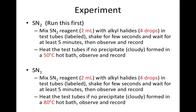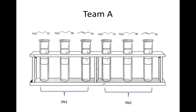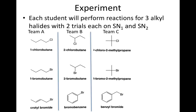To perform the reaction, we will mix 2 mL of the reagent and 4 drops of the alkyl halide in test tubes. Mix well and observe if a precipitate forms, recording the time needed for it to appear. If no precipitate forms at room temperature, the test tube is immersed in a hot water bath and observed again. The hot water bath for SN1 reaction is 50°C and 80°C for SN2 reaction.